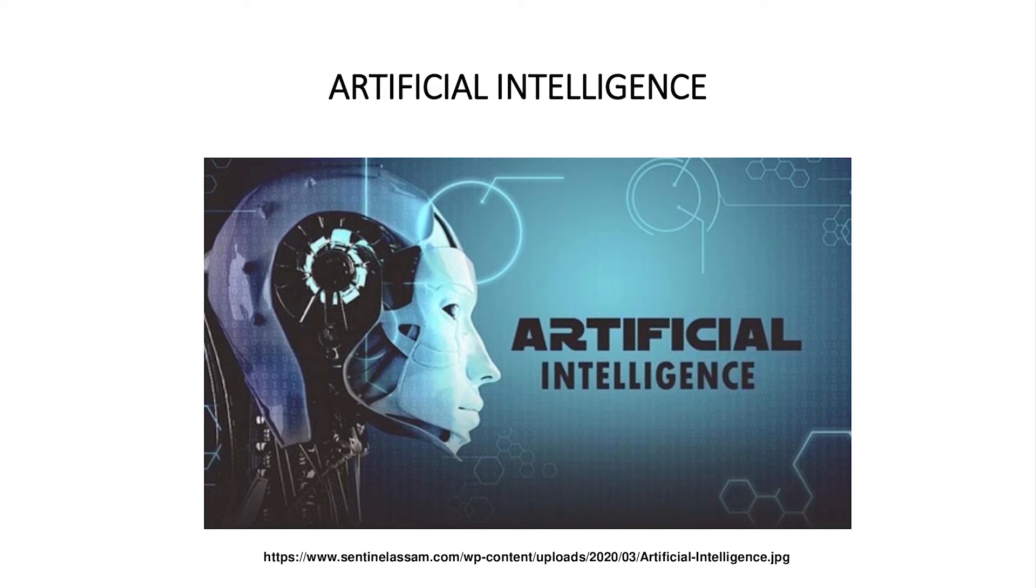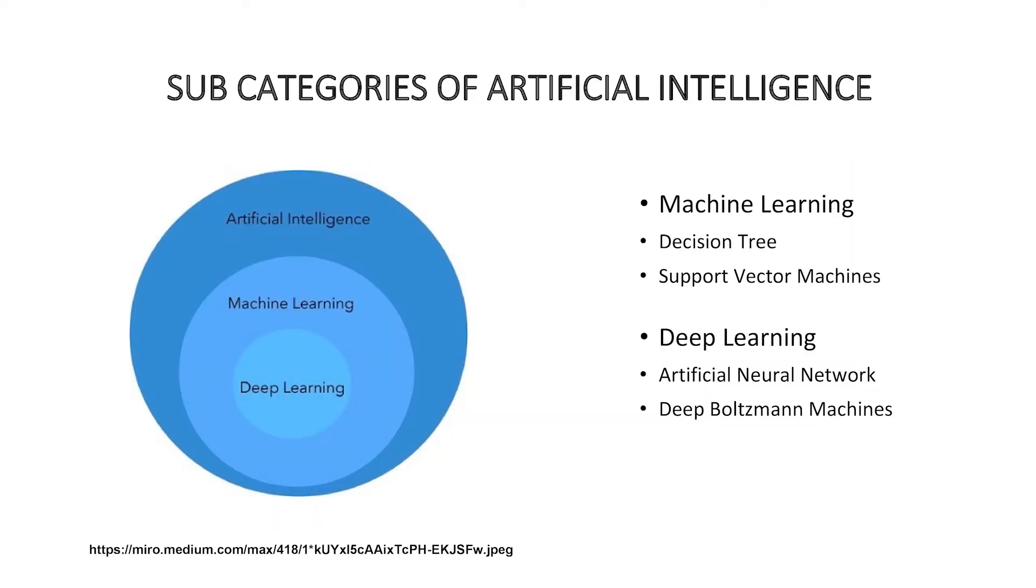Next is artificial intelligence. As the name suggests, it is the intelligence shown by machines to solve a particular problem. This is actually a technology which is being widely applied in the field of robotics to finish a particular task at a much faster speed than human capability. This artificial intelligence has subcategories like machine learning and deep learning.